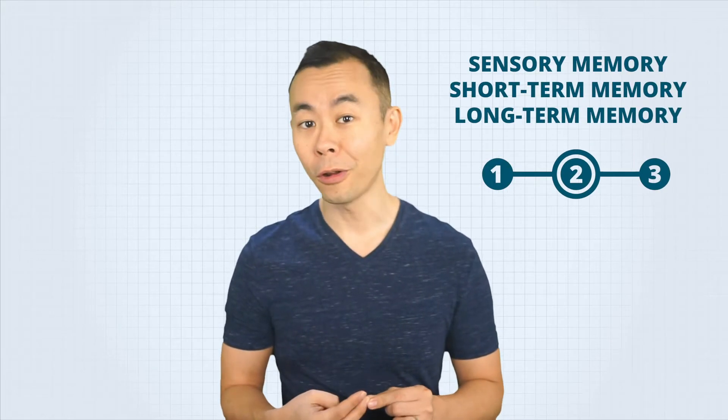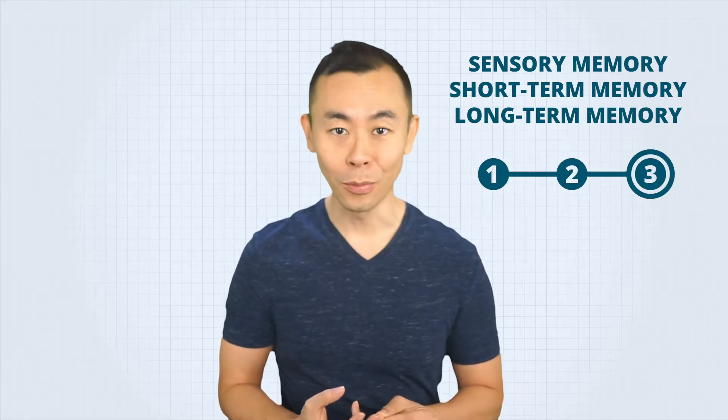Encoding can be seen as moving information from your short-term memory to your long-term memory. And we've talked about these types of memory in detail in episode 18 of the Study Arata series. There are basically three types of memory. Sensory memory, short-term memory, and long-term memory.